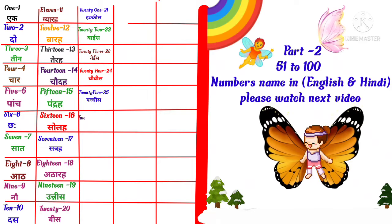T-W-E-N-T-Y S-I-X, 26 means twenty-six. T-W-E-N-T-Y S-E-V-E-N, 27 means twenty-seven.